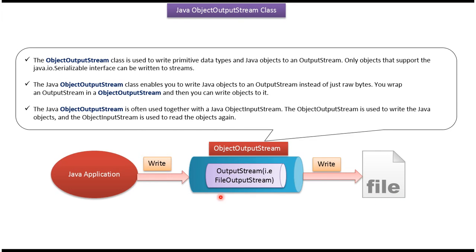Here you can see a file and a Java application. A Java application can use ObjectOutputStream to write primitive data types and objects to the file. ObjectOutputStream writes primitive data types and objects to OutputStream, and OutputStream in turn writes them to the file.